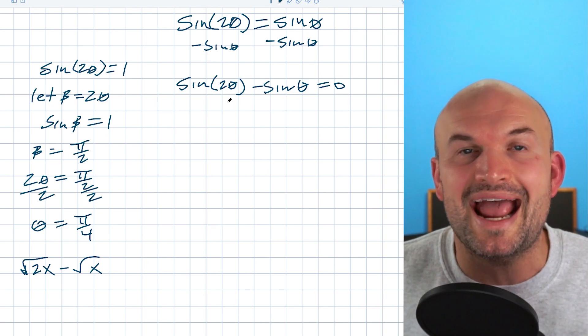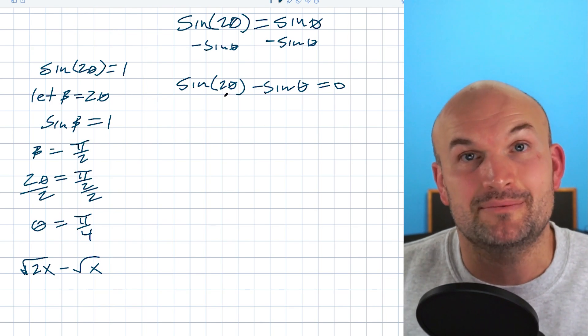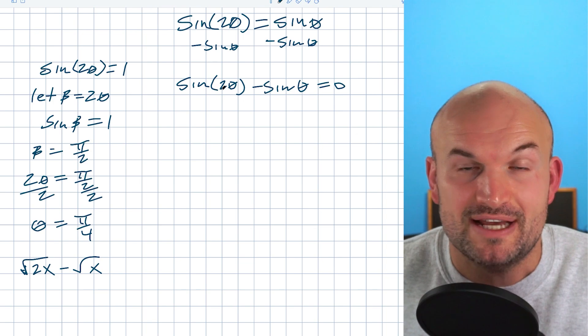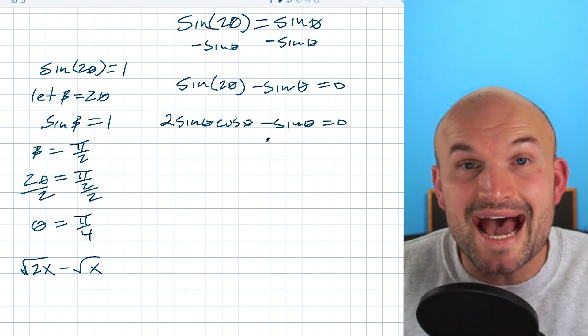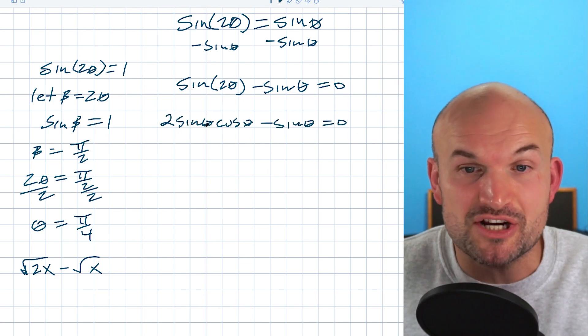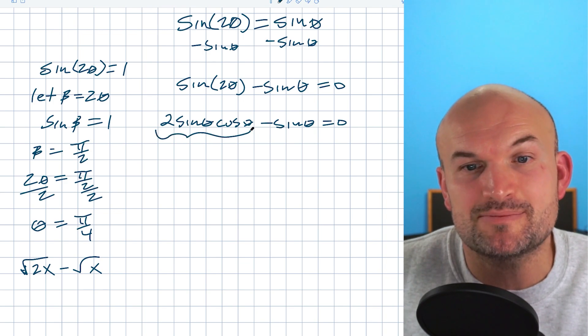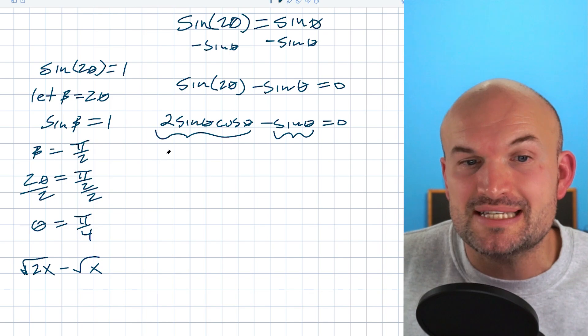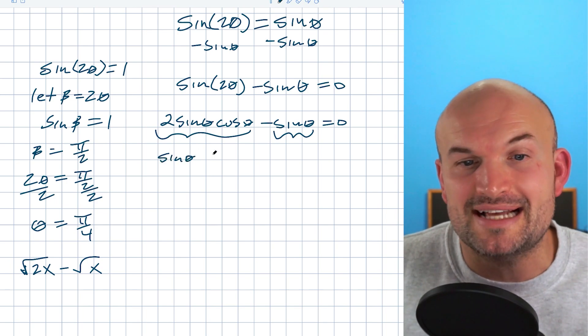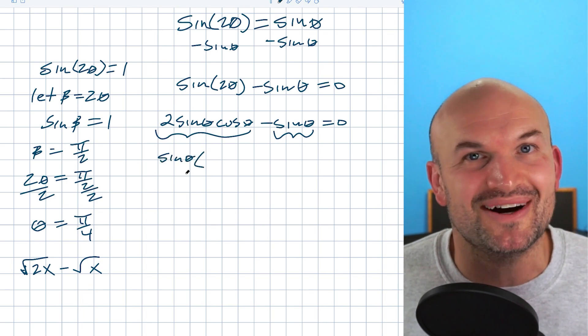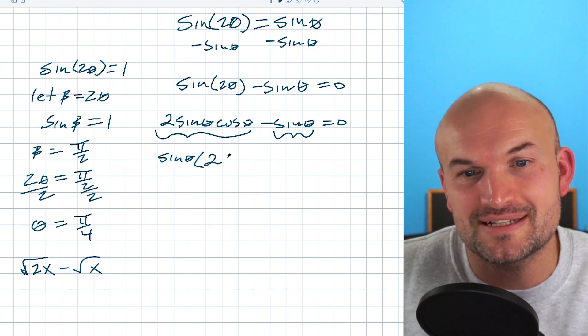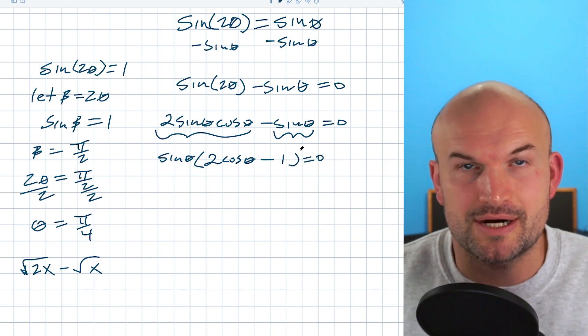So sin(2θ) equals 2sin(θ)cos(θ). Now, hopefully you recognize that I have an expression minus another expression, and they both share a sine. So I can divide out that common sine and put it on the outside and rewrite it as a product. That process is what we call, wait for it, factoring. Yes, you are correct. So therefore that's going to be sin(θ)(2cos(θ) - 1) = 0.